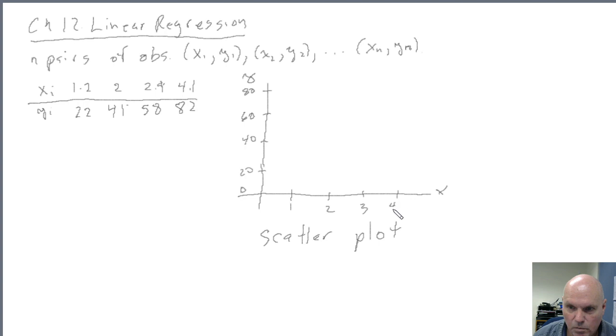2, 3, 4. So, in a scatter plot, we don't draw lines between the data points. We just actually sketch the data points. So, 1.2 and 22, that point would be there. 2 and 41 is going to be a point about right there. 2.9 and 58 would be about right there. And then 4.1 and 82. Of course, this is going to look a lot nicer if we use a computer. In particular, we'll look at using Octave to do this.